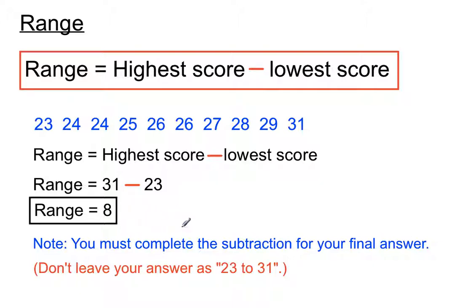So please don't just do the plain English version of saying the scores range from 23 to 31. I know that's used in other areas of life, but in mathematics we follow that rule: highest score minus lowest score, and the final answer is the subtracted result.